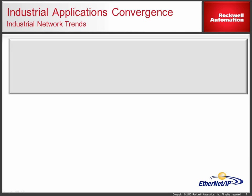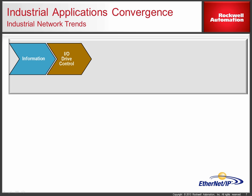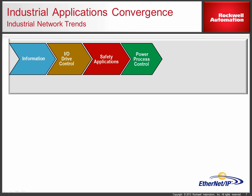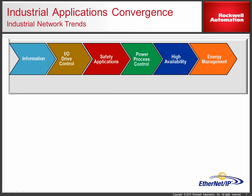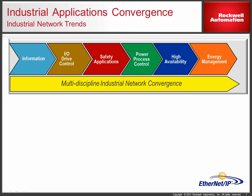Applications are converging in the industrial space. In the past, customers had many disparate production and control systems. Customers have been converging these to a common control and information platform — Rockwell Automation refers to this as the Integrated Architecture. Applications such as information data collection, IO and drive control, safety applications, process and power control, high availability and redundancy, and energy management are all being converged into a common multi-discipline industrial network platform.